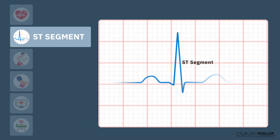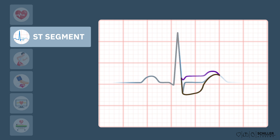The ST segment is a portion of the ECG waveform that represents the interval between ventricular depolarization and repolarization. Changes in the ST segment — elevation or depression — in the exercise ECG can indicate myocardial ischemia, which is a lack of blood flow to the heart muscle that may suggest coronary artery disease. ST depression reflects the discrepancy between oxygen demand and supply.